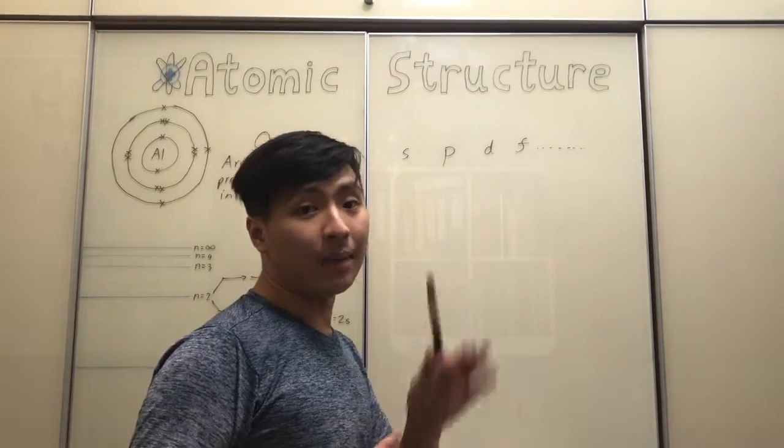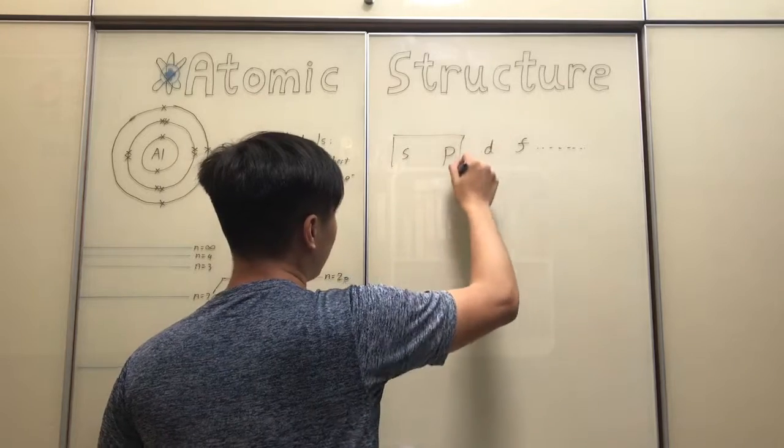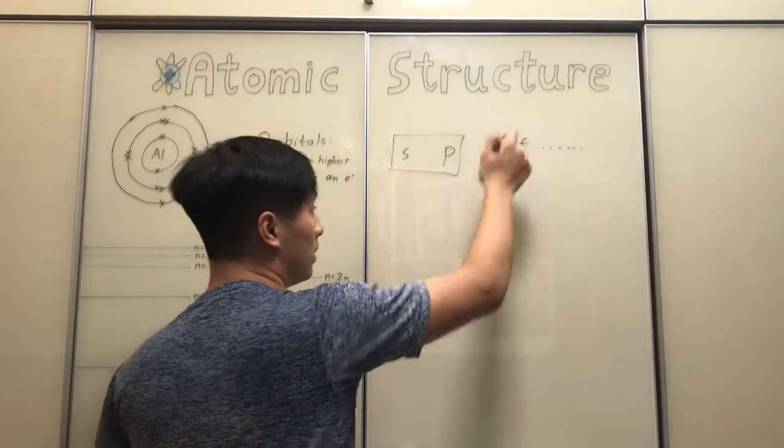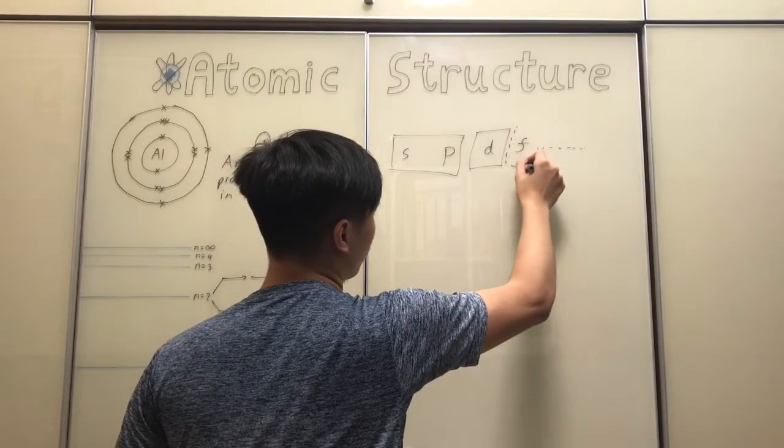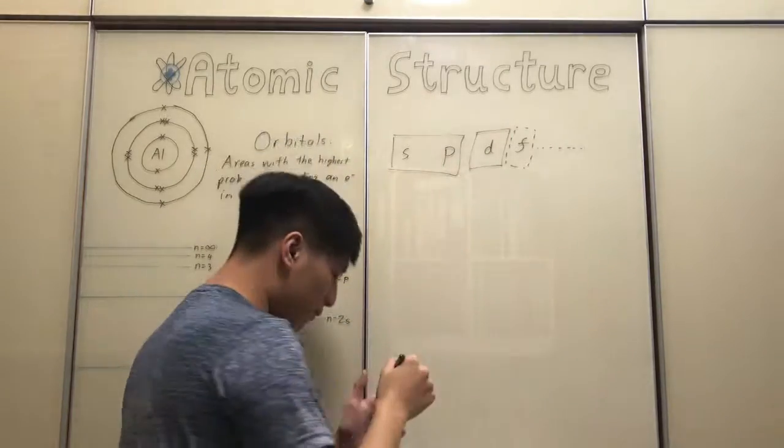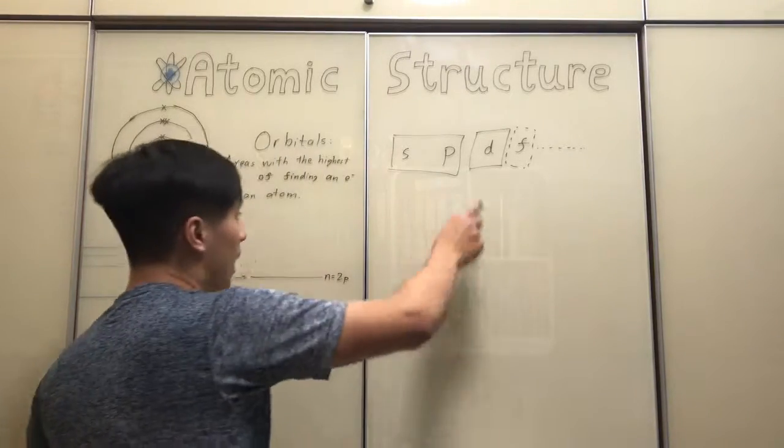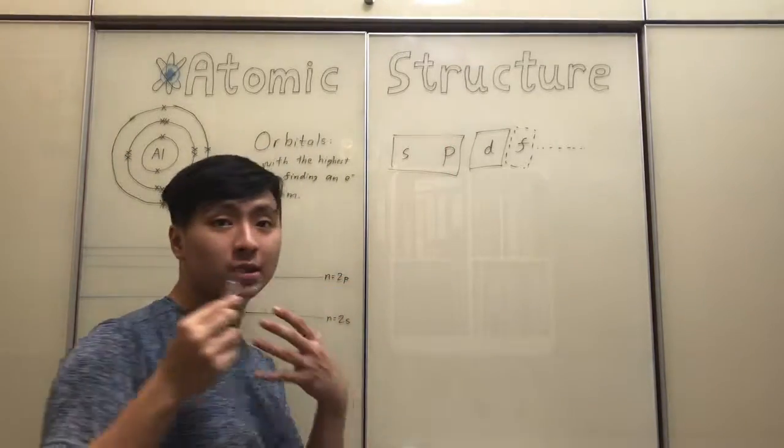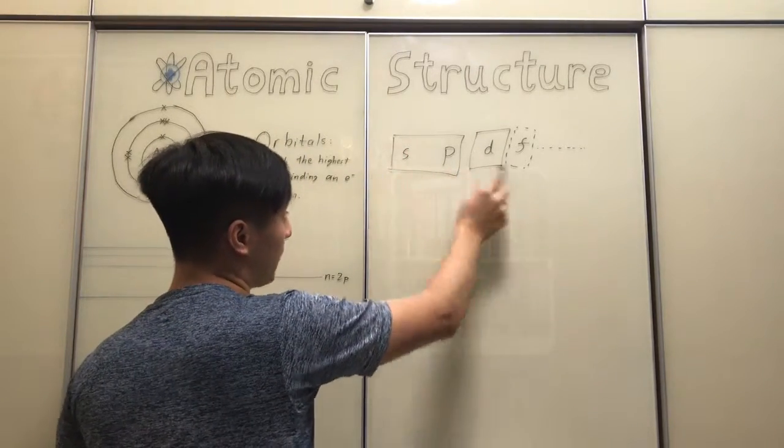But, in the IB syllabus, the most that you need to know is basically these. These are the essentials that you need to know. D is, there's a part of it that you need to know. F is sort of, you need to have knowledge of it, but you don't actually need to use it in the exam. So, basically, across the atomic structure unit, we're going to be focusing on these three orbitals mainly.